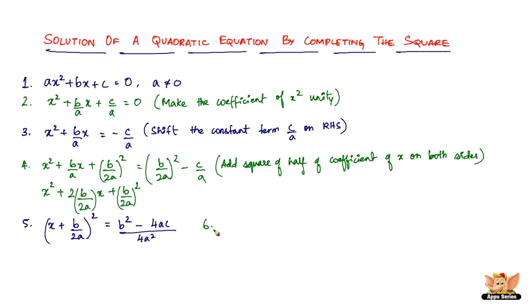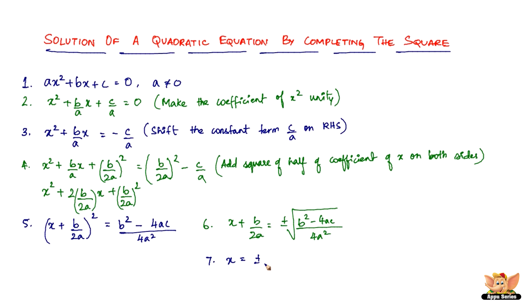The sixth step is to take the square root of both sides. Since the left side is a perfect square, taking the square root gives x plus b by 2a equals plus or minus the square root of b squared minus 4ac divided by 4a squared. Then the final step is to find x by pushing b by 2a to the right-hand side, so x equals plus or minus the square root of b squared minus 4ac by 4a squared, minus b by 2a.